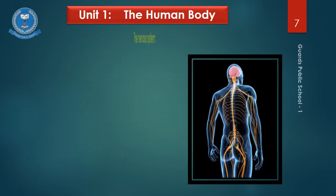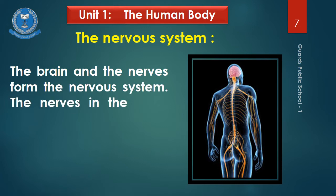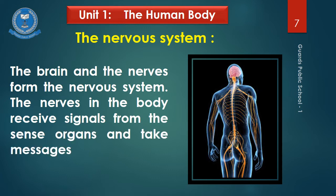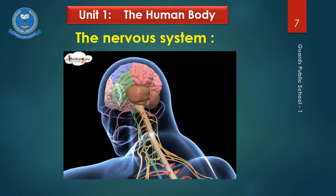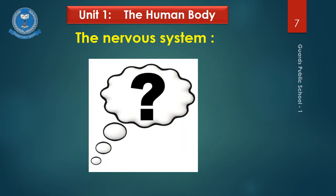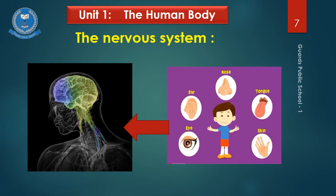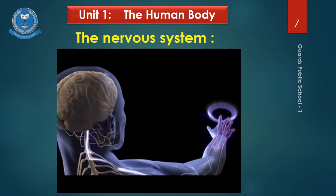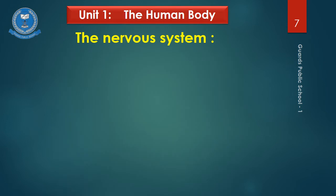Now we will talk about the nervous system. The brain and the nerves form the nervous system. The nerves in the body receive signals from the sense organs and take messages to the brain. The nerves are like wires spread throughout our body. They receive signals from the sense organs, take messages to the brain, and then our body starts working according to those signals.